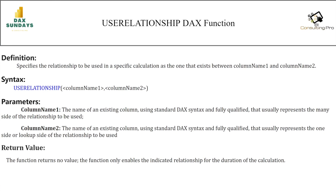In this video we are going to discuss about two very important relationship DAX functions: USERELATIONSHIP and CROSSFILTER. Both of them return no value but are used in DAX calculations. There are many cases when we need to use a certain relationship from our model which is not the active relationship, and in those scenarios both of these functions are going to be very helpful.